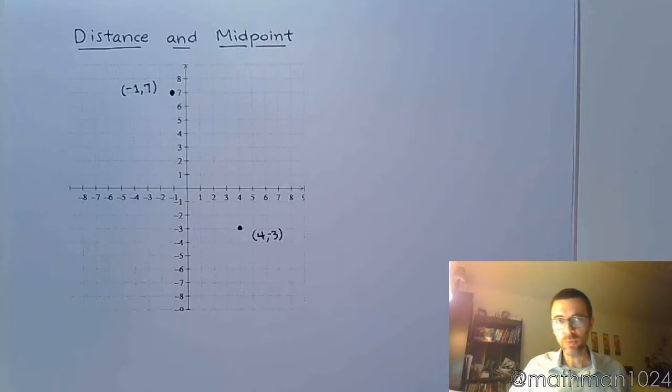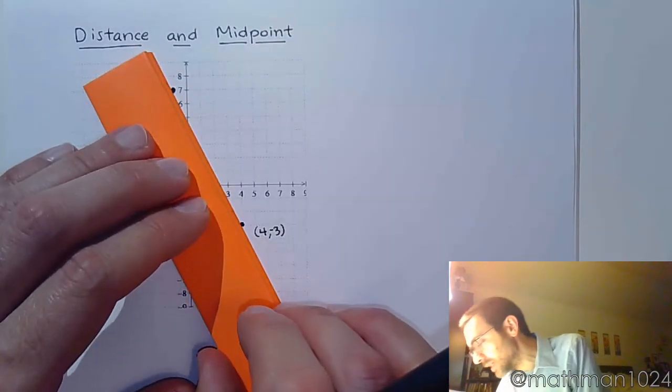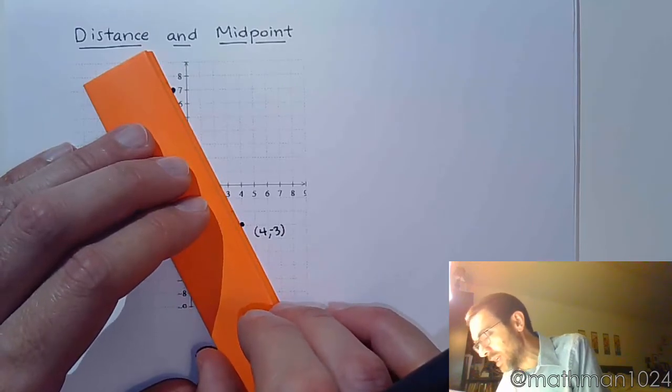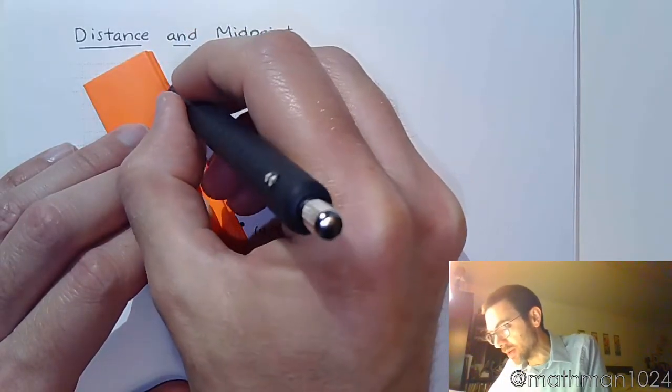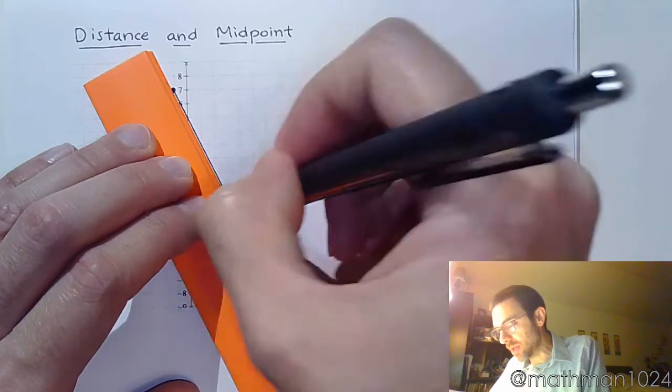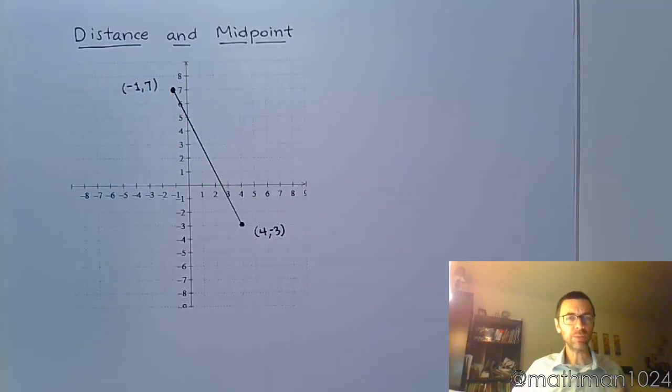The thing to know about distance is that distance is just the straight line connection between these guys and whatever that distance is. It's trying to measure the distance from point to point. We've got a couple of points here, negative 1, 7, and 4, negative 3.